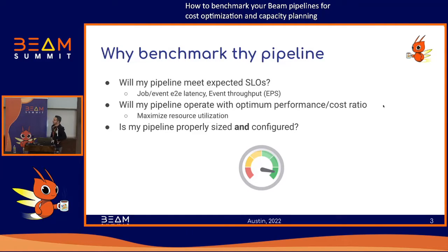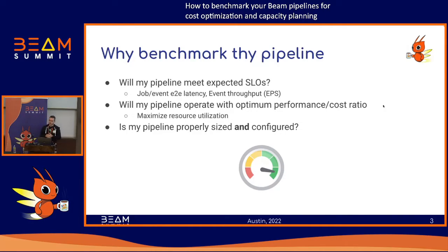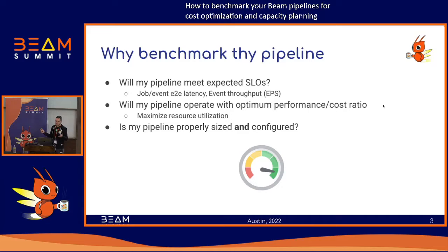So why benchmark the pipeline? Raise your hand if you've ever had questions about whether your pipeline is going to meet your performance SLOs. At this point, you've already built your pipeline, profiled it, and optimized as much as you can — but how does it perform in the real world? What's the end-to-end latency? What's the event throughput in terms of events per second? Will my pipeline operate with the optimum performance-cost ratio? Will I utilize the resources effectively? Is my pipeline properly sized and configured — not just the worker unit size, but all the different parameters you may be passing to it?